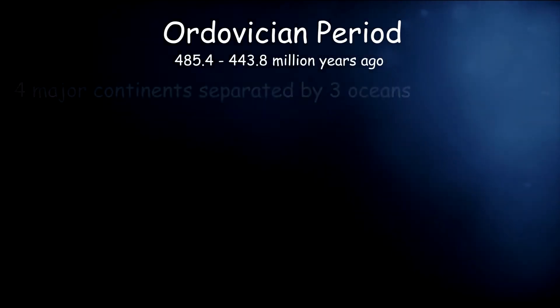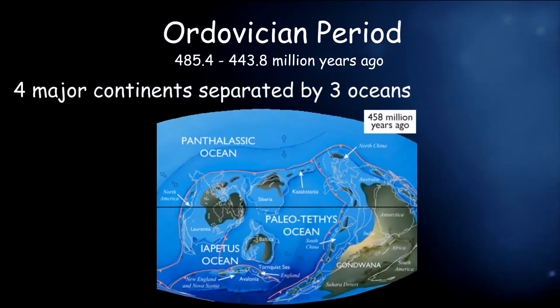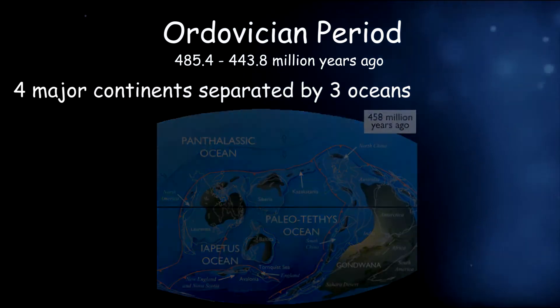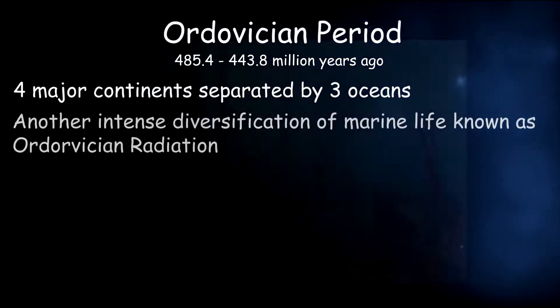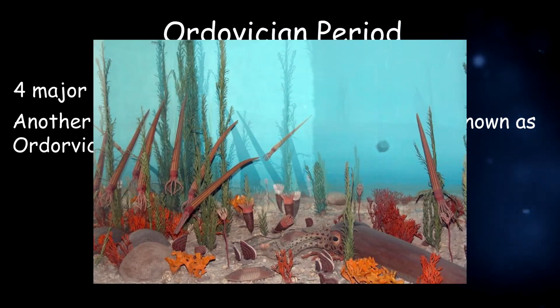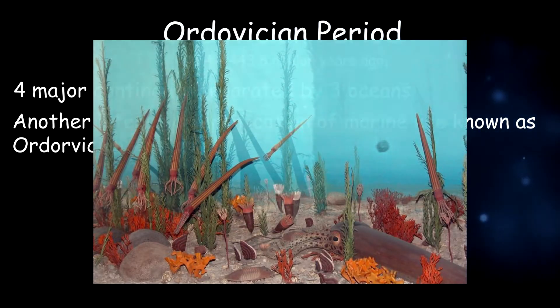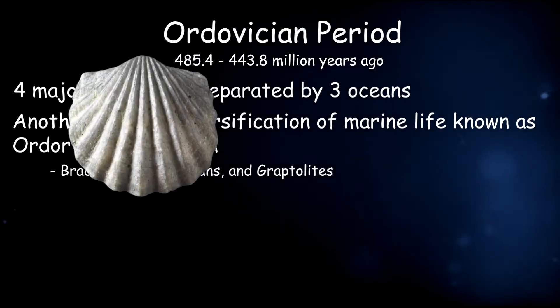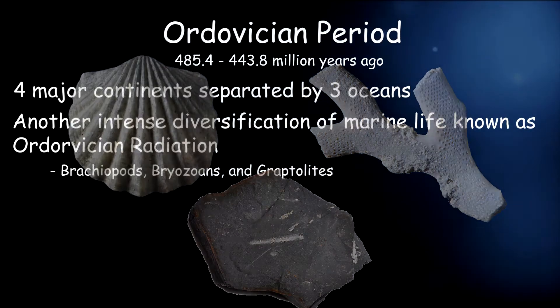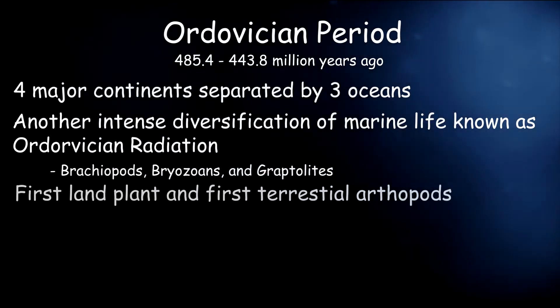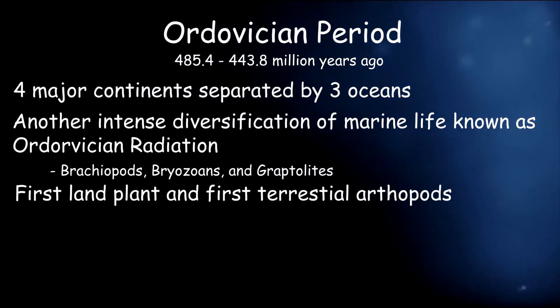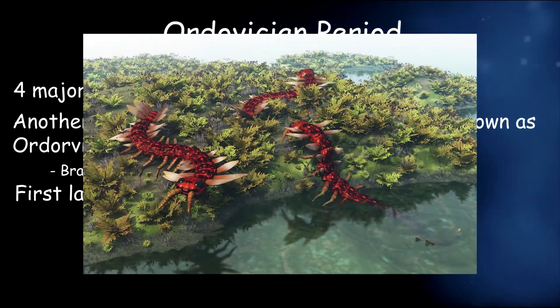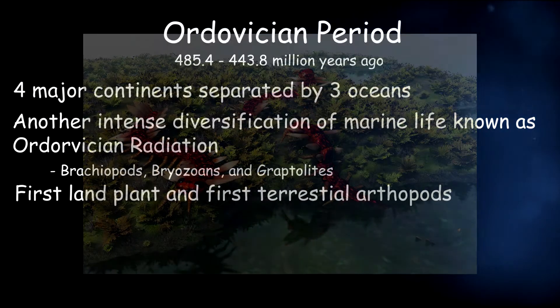The Ordovician Period was a time of high sea levels. Most of the continents were flooded. There were four major continents separated by three major oceans. There was also an intense diversification of marine life known as the Ordovician Radiation. It was dominated by Brachiopods, Bryozoans, and Graptolites. What's cool about this period is the first plants appeared on land and the first terrestrial life, the Ordovician Pods, evolved.